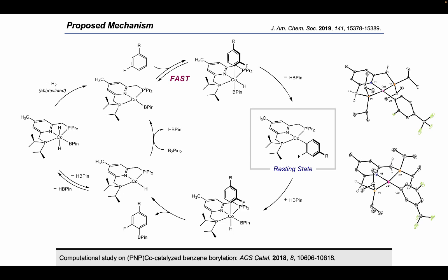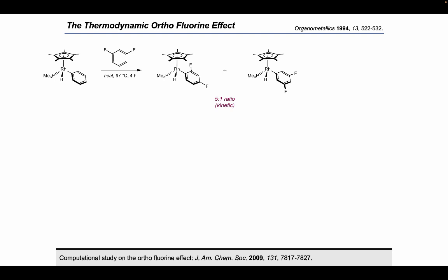To answer that question, we invoke a known phenomenon referred to as the ortho-fluorine effect — the observation that ortho-fluorine substituents stabilize metal aryl complexes. In a seminal study by Jones and Perutz, a CpRh complex was heated to 67°C in meta-difluorobenzene for 4 hours, giving a 5:1 ratio of products. Under those conditions, they didn't observe any of the radioisomer arising from C-H activation between the two fluorines. However, when they heated this complex to 78°C for 20 hours, they observed that product exclusively — the thermodynamic product of C-H activation maximizes the number of ortho-fluorine substituents.